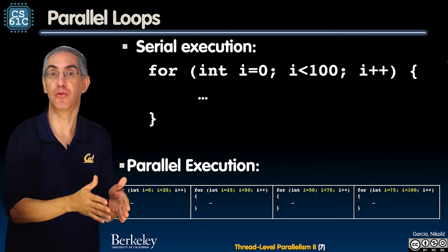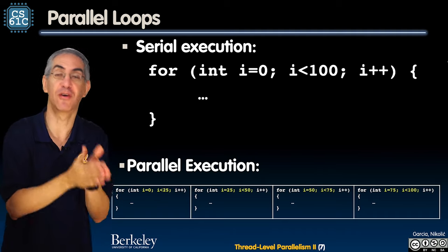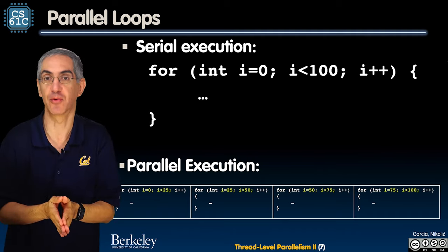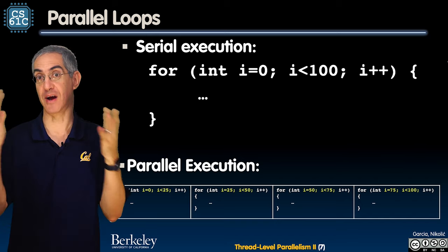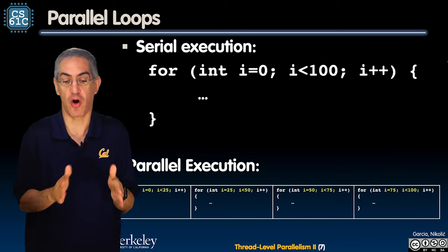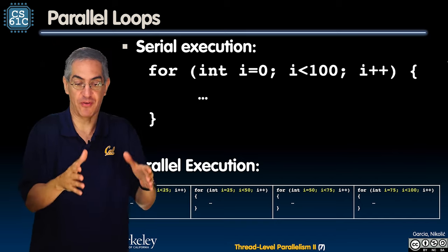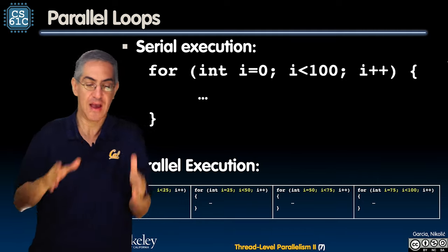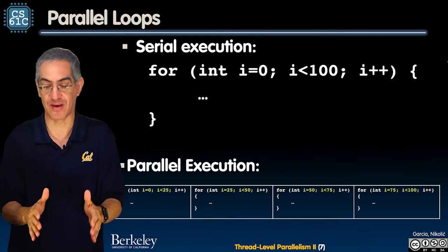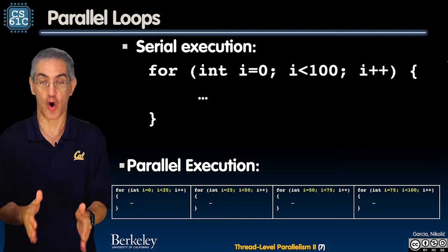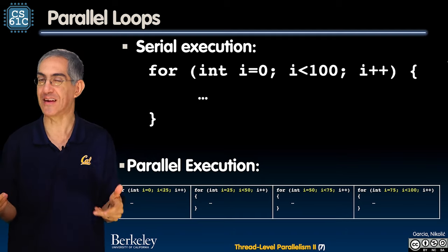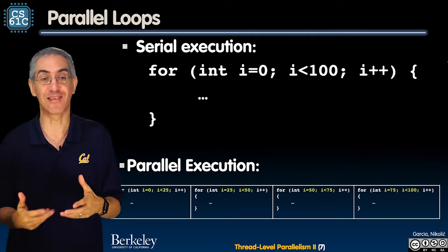We break them up into 0 through 24, 25 through 49, 50 through 74, and 75 through 99. So now you have four different workers all working on one part of the loop. I'm gonna work on this part of the array, you work on that part.